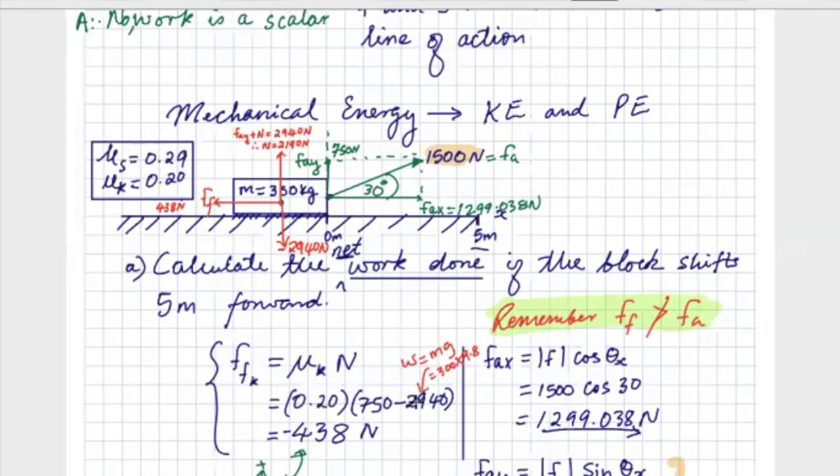So here we said mu k would be 0.20, and then that force of 2190, which I've actually added here to say it would be more like the weight minus that 750, and then we get a frictional force of 438 newtons.